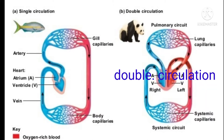In your textbook, page number 59, see the diagrams of single circulation and double circulation, identify the parts, and label them. From observation, it is clear that in figure 11a, blood flows through the heart only once to complete one circulation — that is single circulation. If blood flows through the heart twice for completing one circulation, it is called double circulation. You can identify and label the parts in your textbook.